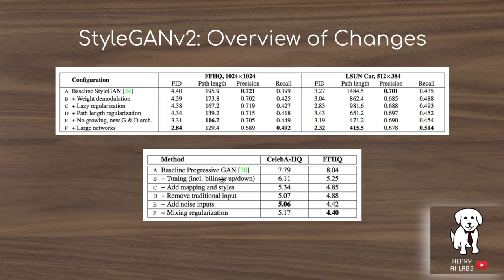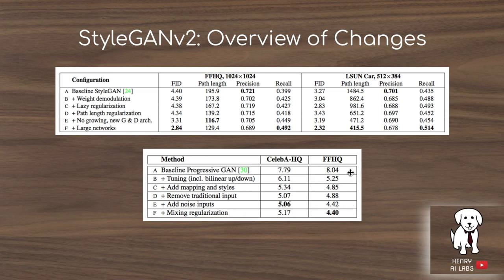In StyleGAN version 1, they take the baseline of the progressively growing GAN with an FID score on the FFHQ dataset of 8.04, and introduce things like tuning of the bilinear up and down sampling, adding the mapping and style part with adaptive instance normalization, removing the traditional input to start from a constant value, adding noise inputs, and adding mixing regularization to bring the FID score down to 4.4. StyleGAN version 2 starts from this baseline and adds weight demodulation, lazy regularization, path length regularization, getting away from progressive growing, and scaling up network capacity to get this score down to 2.84.